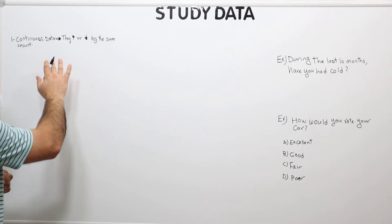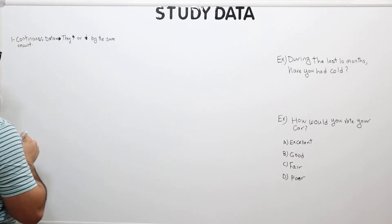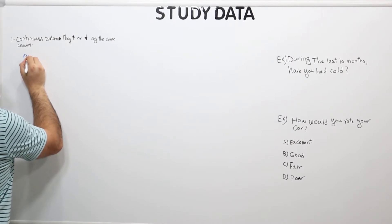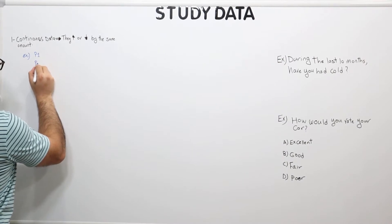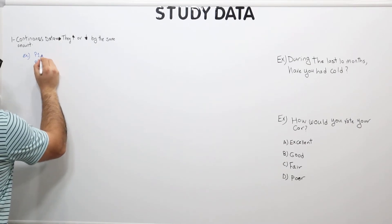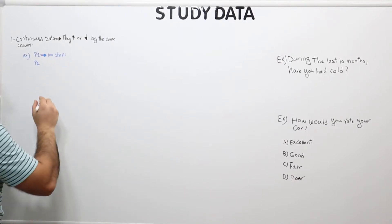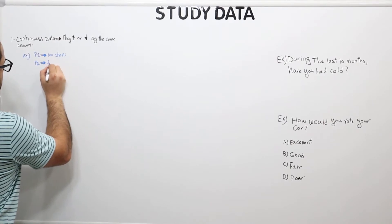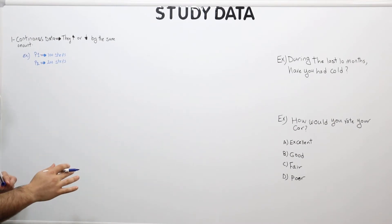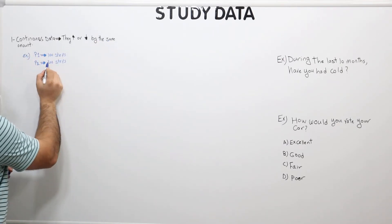So what do I mean by increase and decrease by the same amount? Let's take an example. I have two patients — patient number one and patient number two. Patient number one walks 100 steps and patient number two walks 200 steps. We can clearly see that patient number two has walked twice as much as patient number one, which is an increase by the same amount — 100 steps.